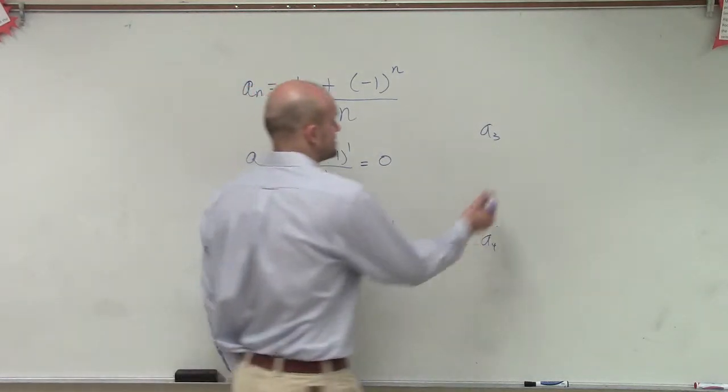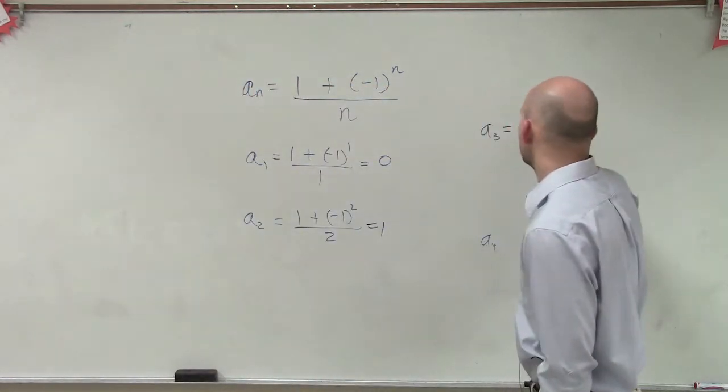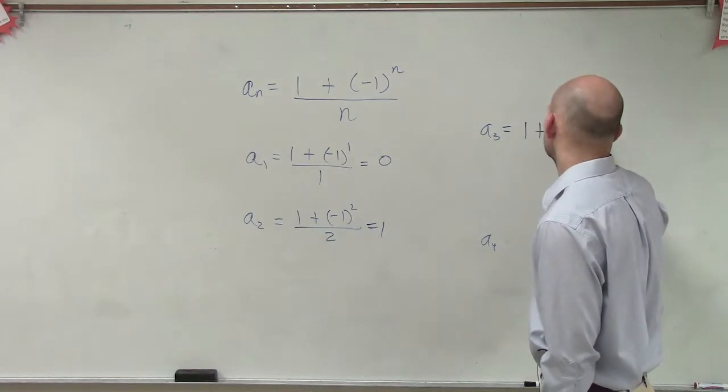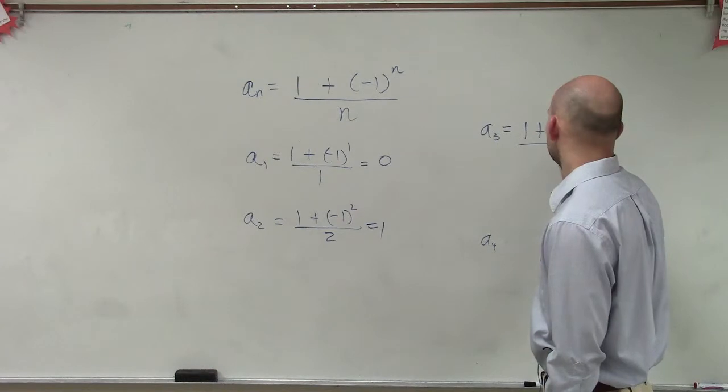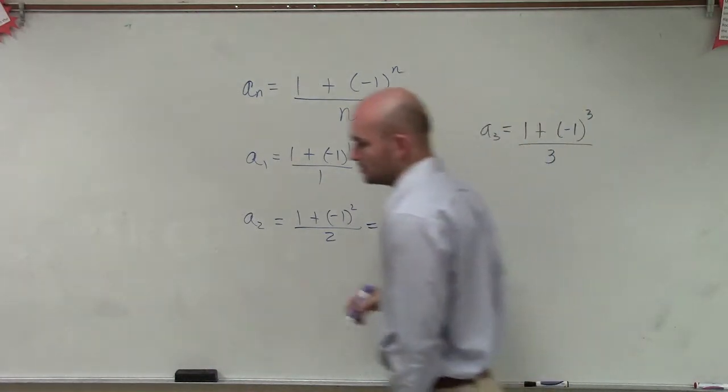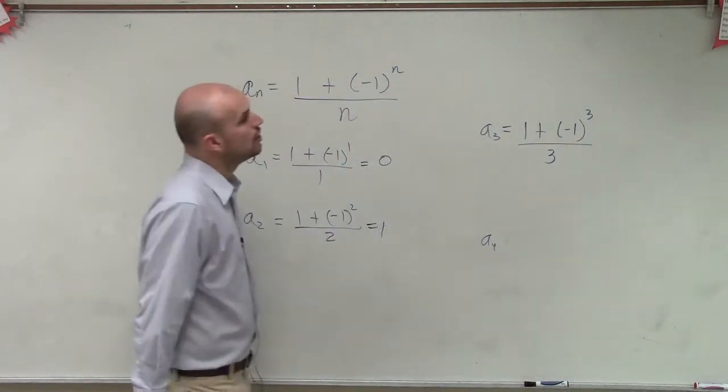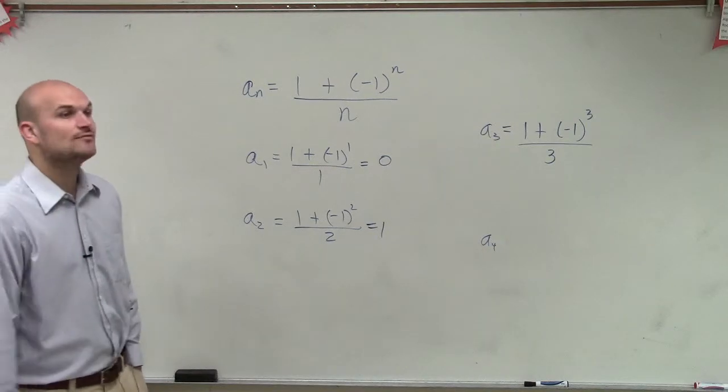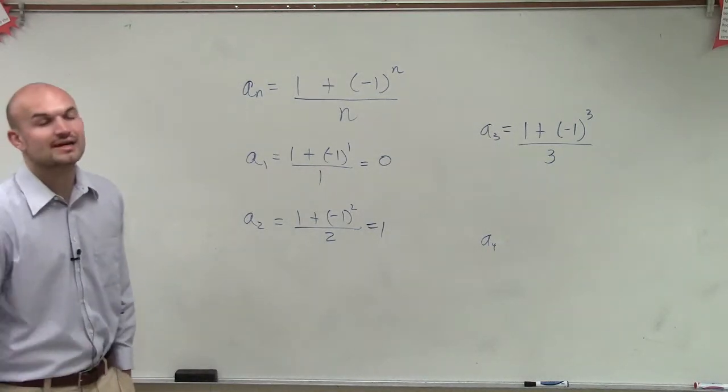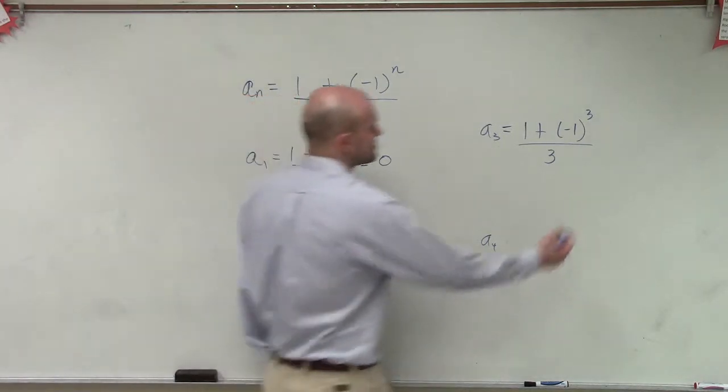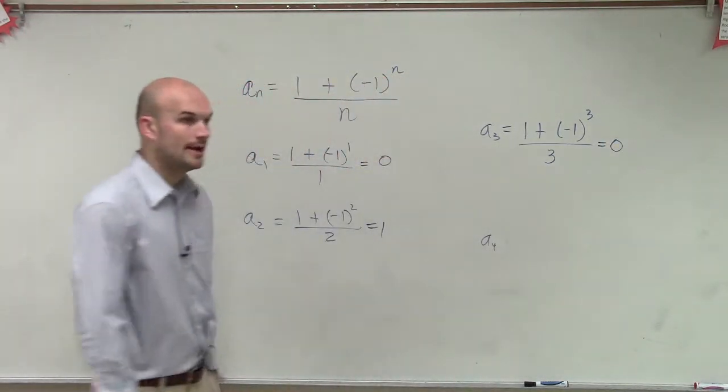Now let's go and take a look at a_3. So we have 1 plus negative 1 to the third power divided by 3. So here, in this case, we have 1 plus negative 1 cubed is going to be, again, negative 1. 1 plus negative 1 is 0. 0 divided by 3 is 0.